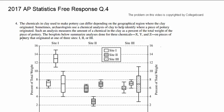This is question number 4 for the 2017 AP Statistics Test. Chemicals in clay used to make pottery can differ depending on the geographical region where the clay originated. Sometimes archaeologists use a chemical analysis of clay to help identify where a piece of pottery is from.